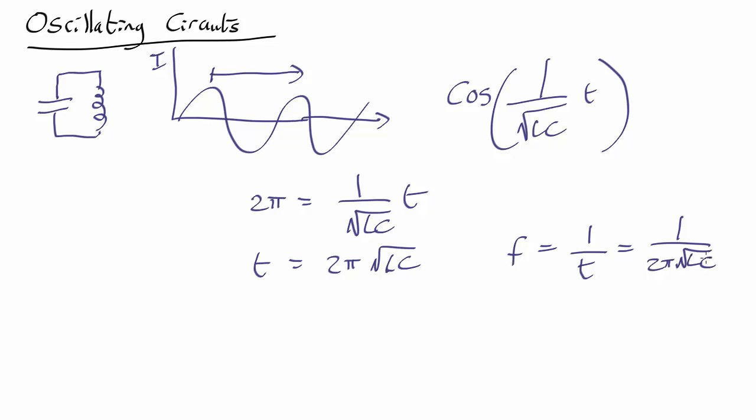Now a typical capacitor has a capacitance of about maybe a microfarad, and a typical inductor is about a millihenry. If you plug those numbers in—that's 10^-6 and 10^-3—that comes out as about 5,000 cycles per second, also known as hertz.